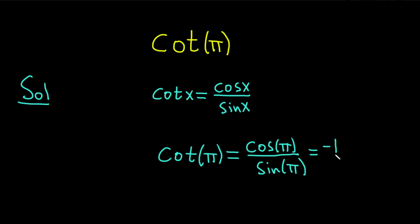Cosine of pi is negative 1. Sine of pi is 0. Game over, right? You cannot have 0 on the bottom.